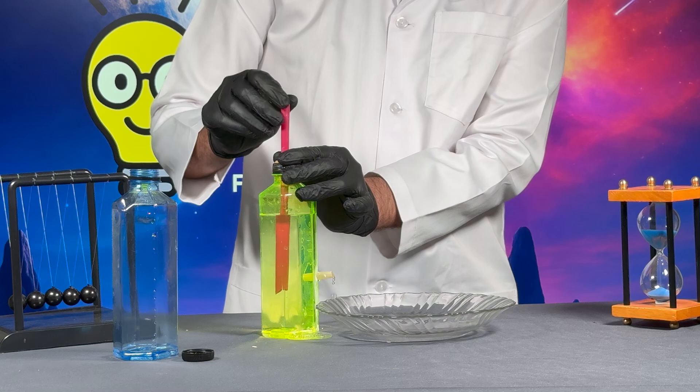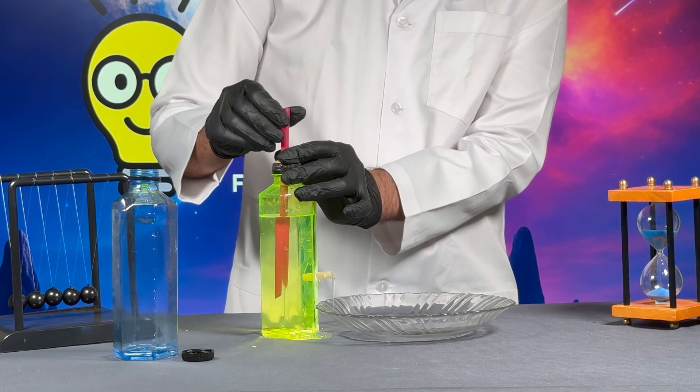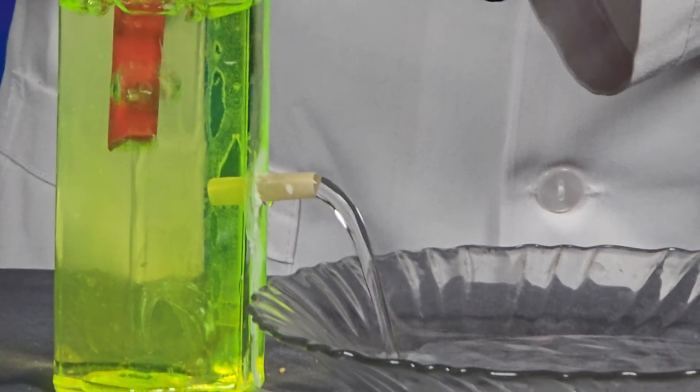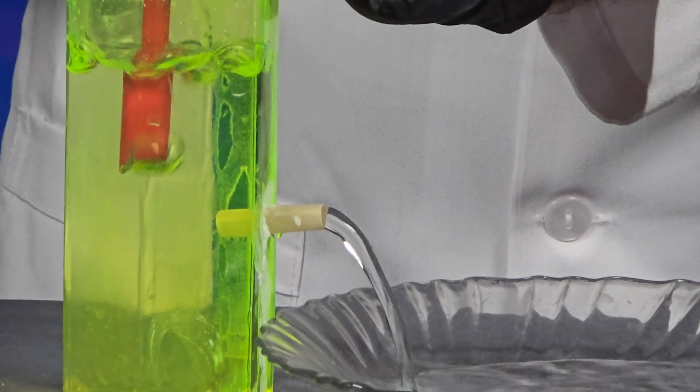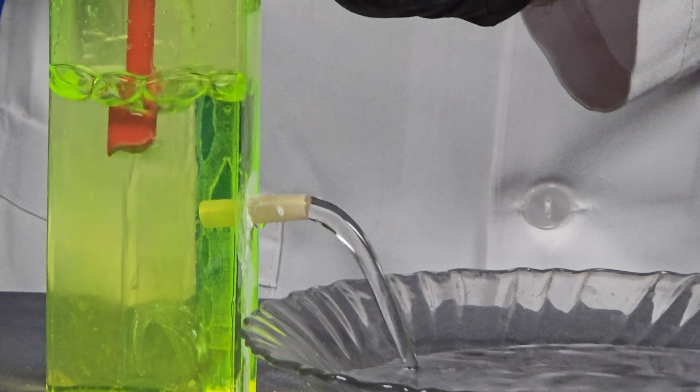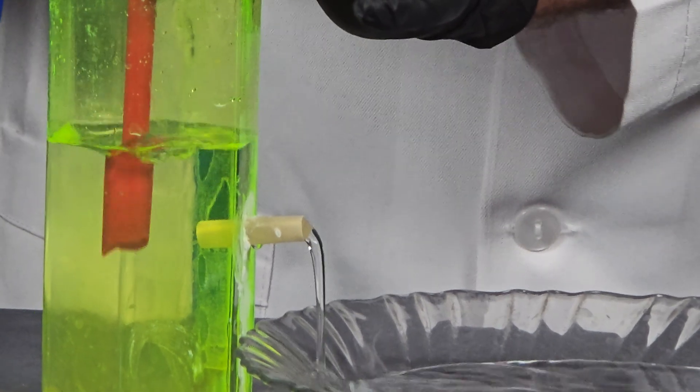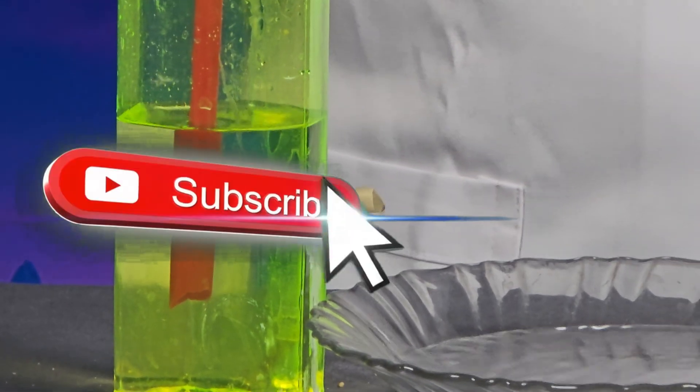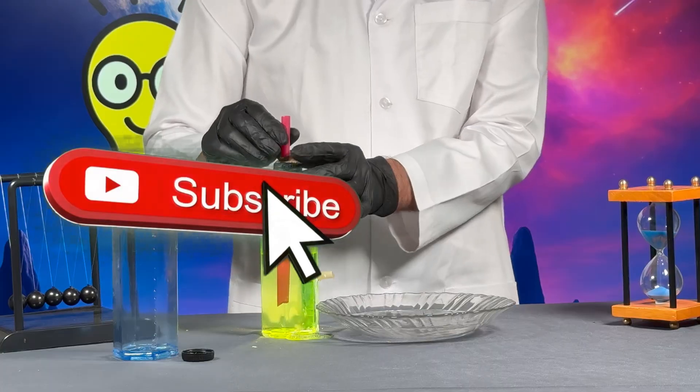And that's all because of air pressure. Water can only flow out if air can get in to replace it. When the top straw is higher than the side straw, air enters and pushes the water out. But if the top straw is below the side straw, no air can enter and the water flow stops.